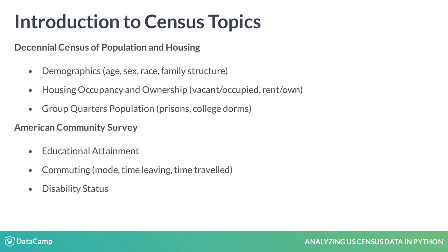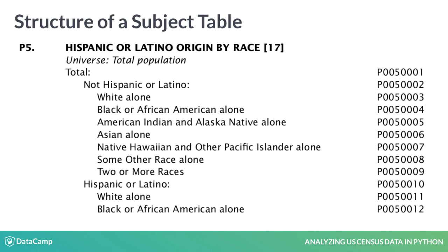The American Community Survey is an annual survey of approximately 1.5% of housing units that covers a large number of economic and social topics, which we will explore throughout this course. The data is released in subject tables devoted to specific topics. We will familiarize ourselves with the subject tables by working with table P5, Hispanic or Latino origin by race. The column identifiers begin P005 for the subject table, followed by a column index of 1 to 17.